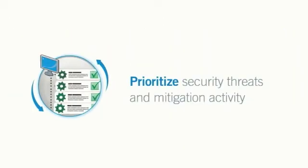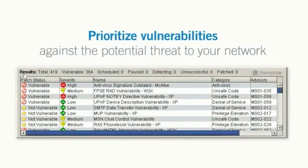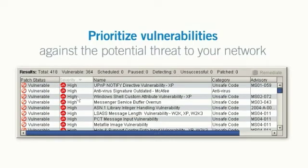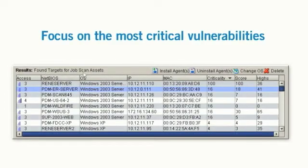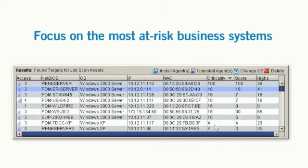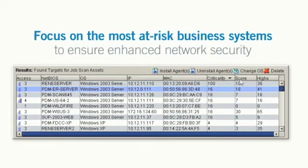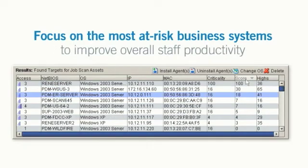Prioritize security threats and mitigation activity. Lumention's vulnerability management solution allows you to prioritize vulnerabilities against the potential threat they pose to your network. IT staff can then focus their efforts on addressing the most critical vulnerabilities and at-risk business systems to ensure enhanced network security while improving overall staff productivity.